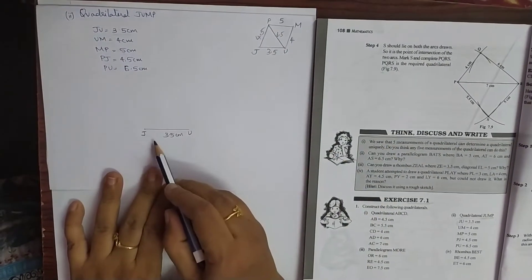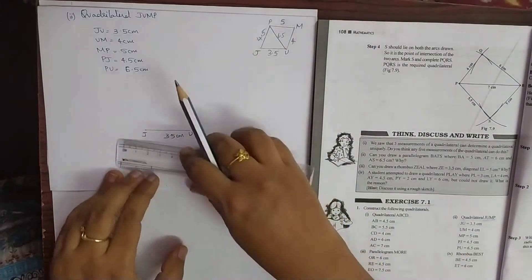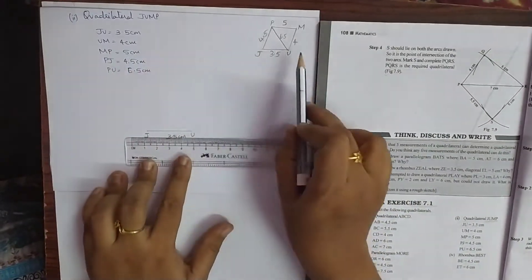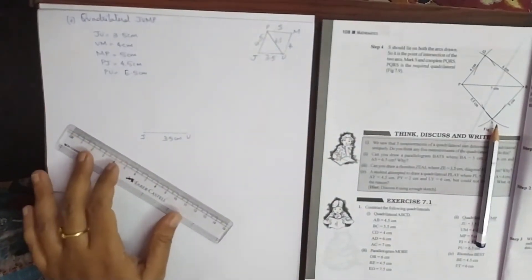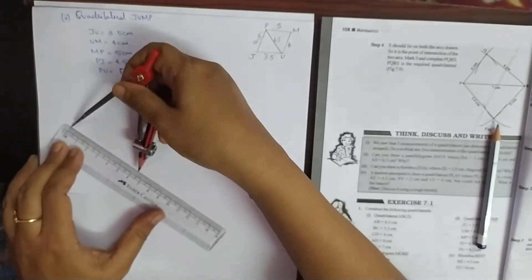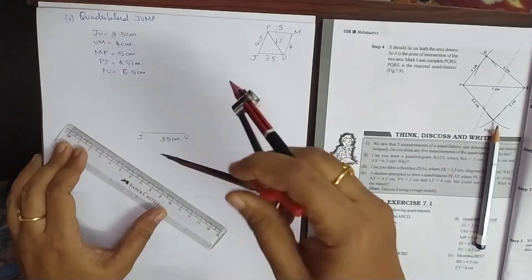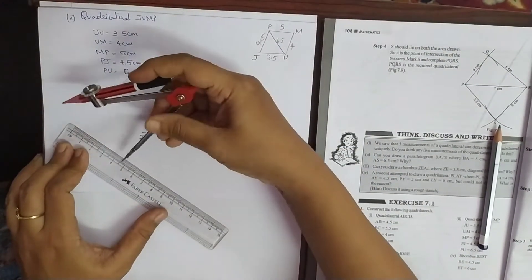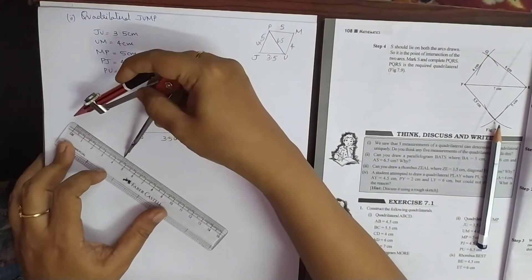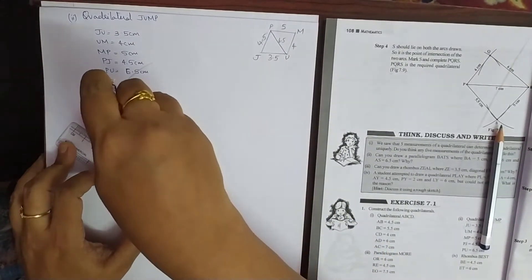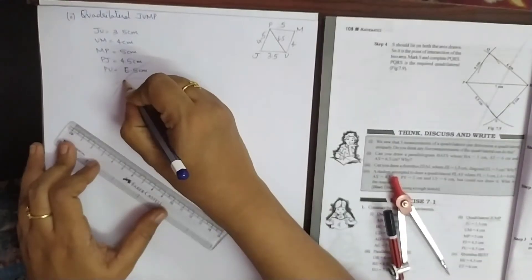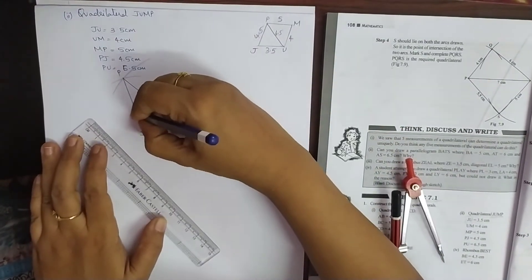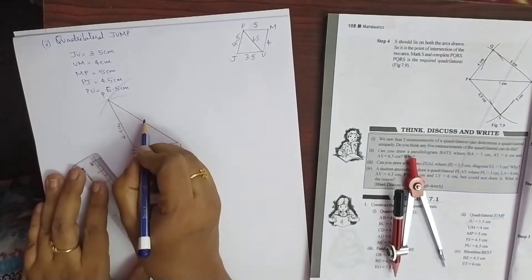I am going to first draw this part. I have drawn JU as 3.5 cm. Next, I am going to draw PU — PU is 6.5. So let me take 6.5 from 0. From U, draw a 6.5 arc. Then PJ is 4.5, so let me take 4.5 measurement. The point which meets is my P. I am going to join PJ and PU. Write 4.5 cm and 6.5 cm there.